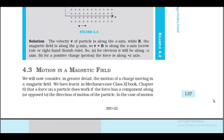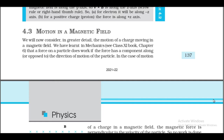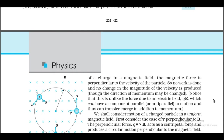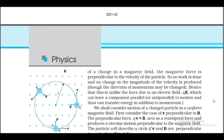Section 4.3: Motion in a Magnetic Field. We now consider in greater detail the motion of a charge moving in a magnetic field. A force on a particle does work if the force has a component along or opposed to the direction of motion. In the case of motion of a charge in a magnetic field, the magnetic force is perpendicular to the velocity of the particle, so no work is done and no change in the magnitude of the velocity is produced, though the direction of momentum may be changed. This is unlike the force due to an electric field qE, which can transfer energy in addition to momentum.